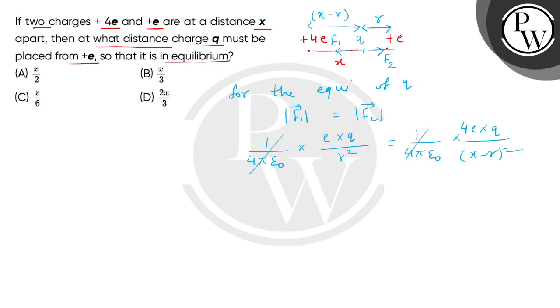Now 1/(4πε₀), e and q on both sides will cancel. We will find that (x minus r)/r whole squared equals 4, so (x minus r)/r equals plus or minus 2.